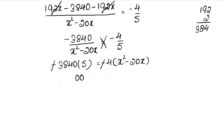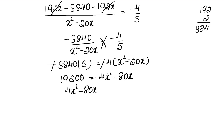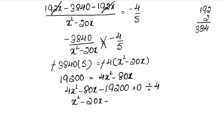Rearranging: 4x squared minus 80x minus 19200 equals 0. Dividing the whole equation by 4: x squared minus 20x minus 4800 equals 0. Now we need to factor x squared minus 20x minus 4800.